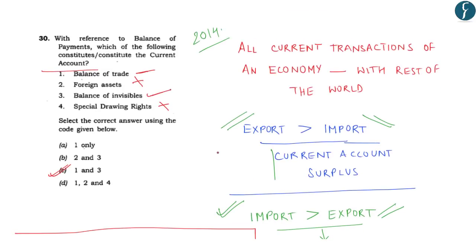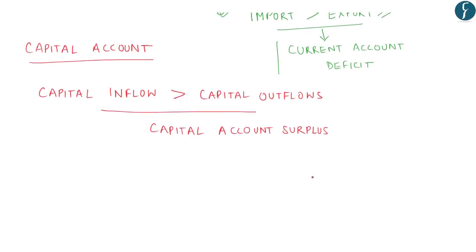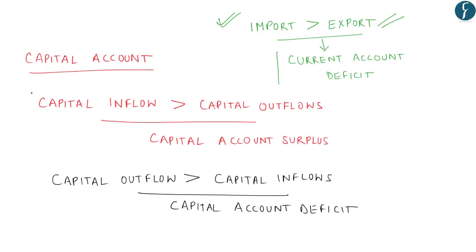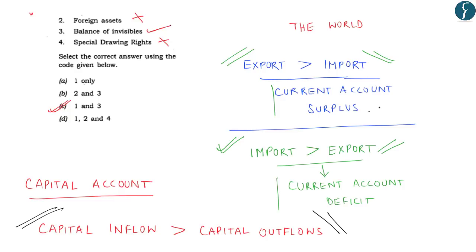A similar question can be asked on capital account transactions. In capital account: when capital inflow is greater than capital outflow, it amounts to capital account surplus; when capital outflow is greater than capital inflow, it amounts to capital account deficit. Both these concepts — capital account surplus and deficit — become important, alongside current account surplus and current account deficit. This topic is very important from the prelims point of view in the economics section of UPSC.